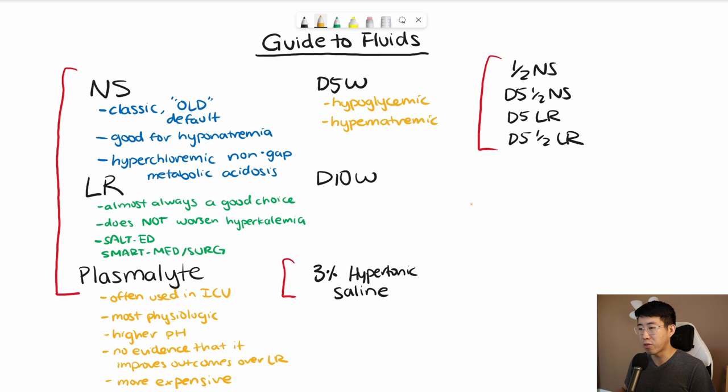D10 water I really reach for if they have really bad hypoglycemia or if they are fluid overloaded and for some reason we need to limit the amount of fluids we're giving. So for example, if somebody is receiving 50 cc's an hour of D5 water, then if you give them D10 water, then you can give them 25 cc's an hour and that'll help prevent excess fluid from building up in their body.